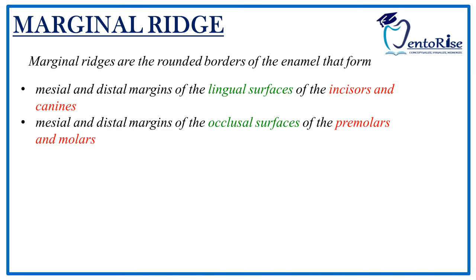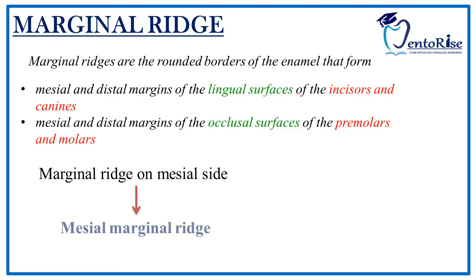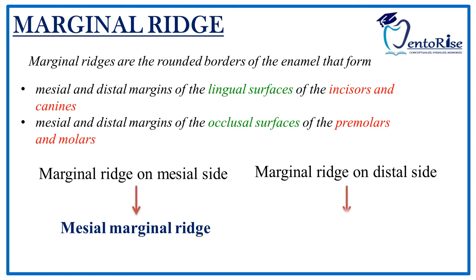The mesial surface faces towards the midline and the distal surface faces away from the midline. If you are not clear with this concept, please check out our video on surfaces and ridges of the tooth — the link is given in the description below. The marginal ridge present on the mesial side is called the mesial marginal ridge, and the marginal ridge present on the distal side is called the distal marginal ridge.